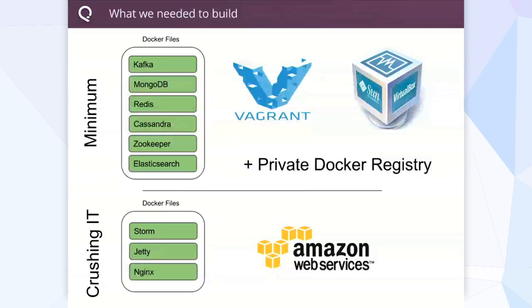What we needed to build to actually pull this off: at a minimum, Kafka, Mongo, Redis, Zookeeper, Elasticsearch, and Cassandra. Our goal was to get each one of those inside a container inside Docker, then run that inside a virtual machine using Vagrant and Virtualbox. We also wanted to get all of our Docker images into a private Docker registry — we didn't really need to, we could have used a public one, but we felt more comfortable and it gives us extra capabilities long-term.